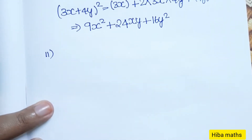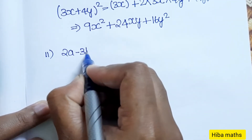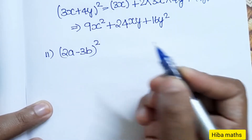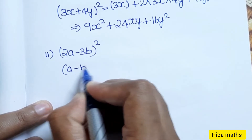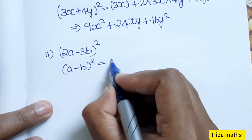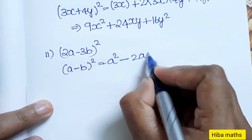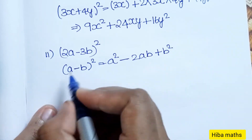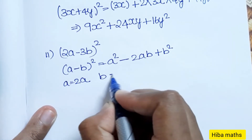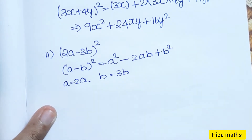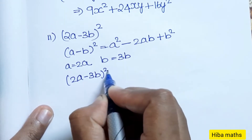Second question: (2a − 3b) whole square. Since we have a minus, we use the (a − b)² formula: a squared minus 2ab plus b squared. Here a is 2a and b is 3b.